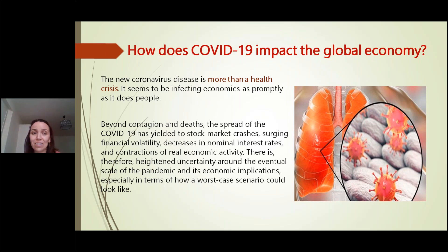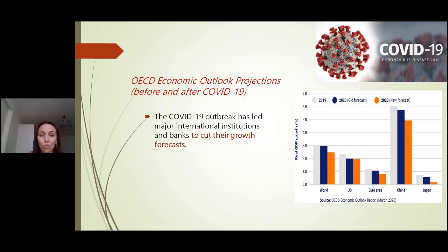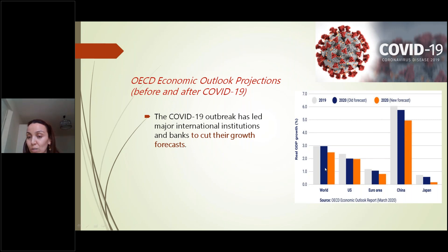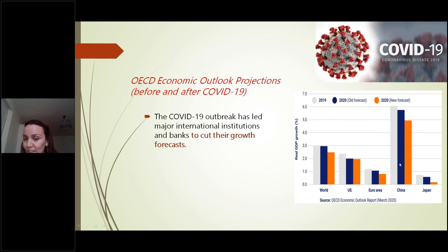This has led international organizations like the OECD to cut their growth forecasts. The forecasts for the global real GDP growth rate for 2020 decreased by about 0.5% compared to the old forecast, and for all countries the real growth rate was lowered, especially for China.